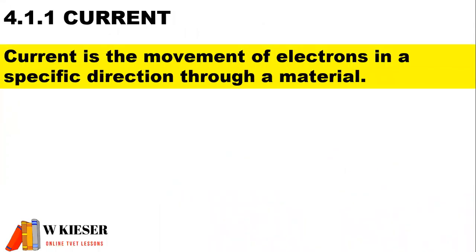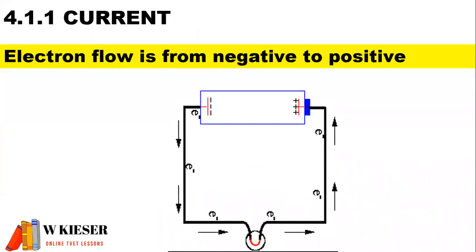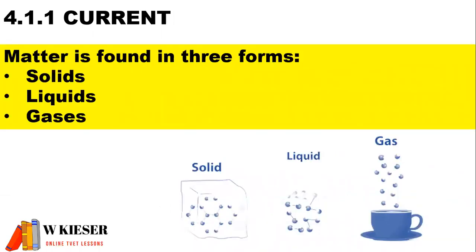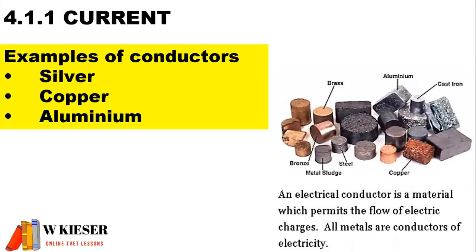To define current: current is the movement of electrons in a specific direction through a material. Conventional current flow is from positive to negative. Electron flow is from negative to positive. Three forms of matter that are found: we get solids, liquids and gases. An electrical conductor is a material which permits the flow of electric charges. Some examples of conductors are silver, copper and aluminum.